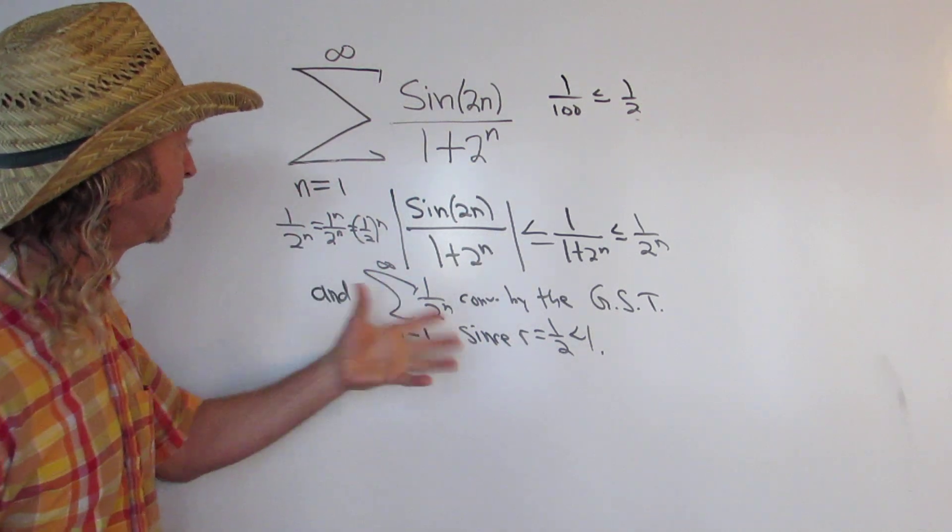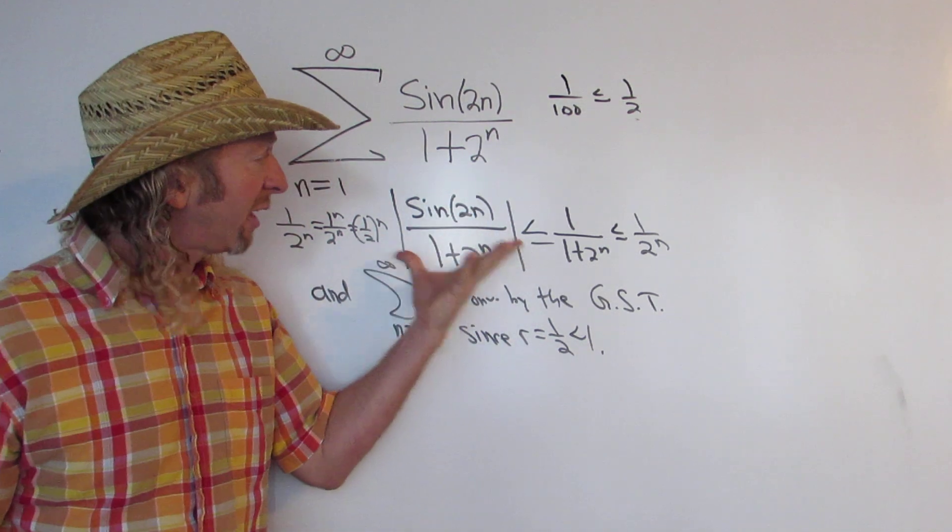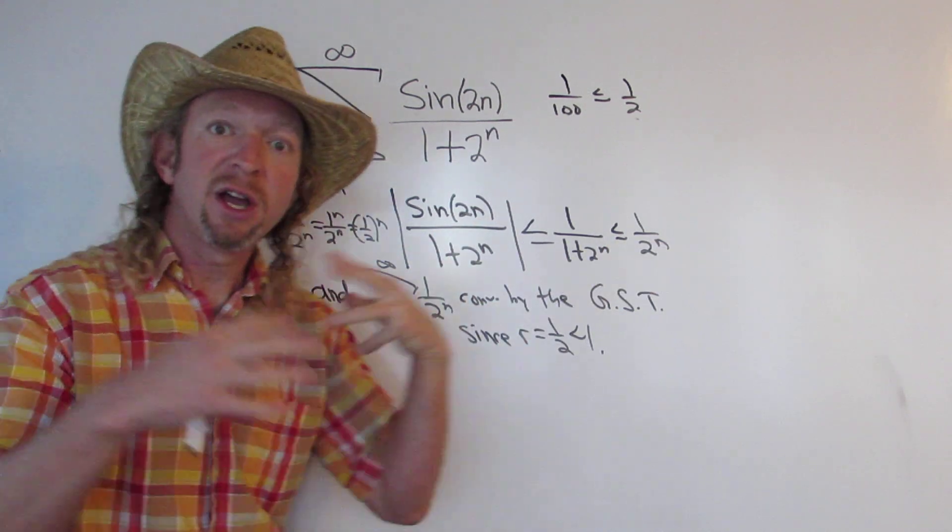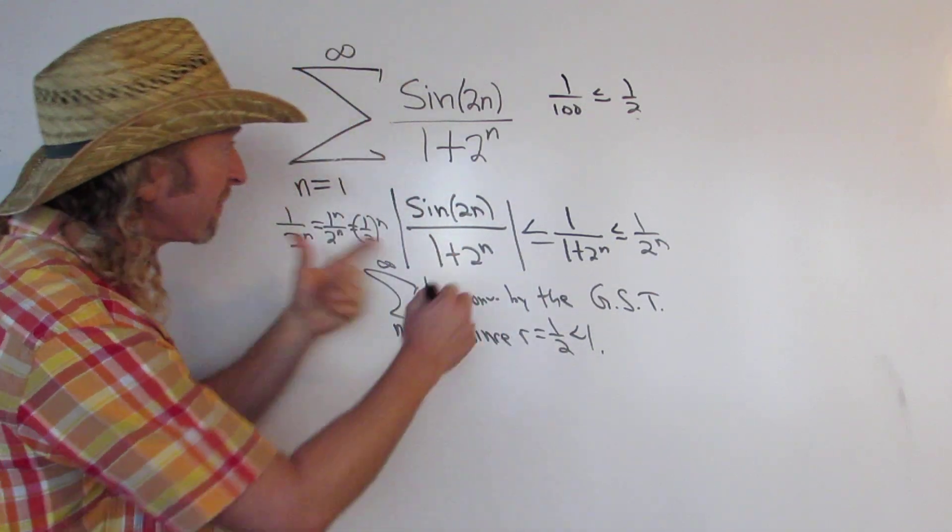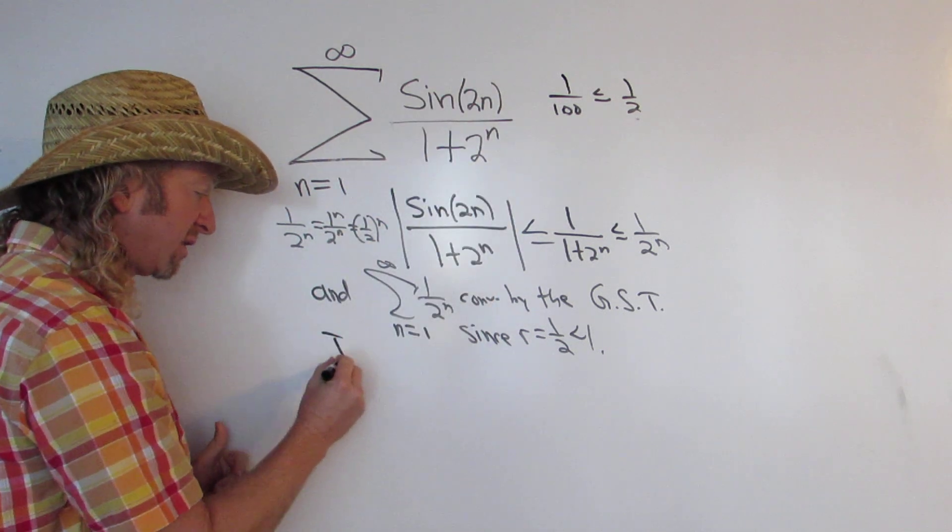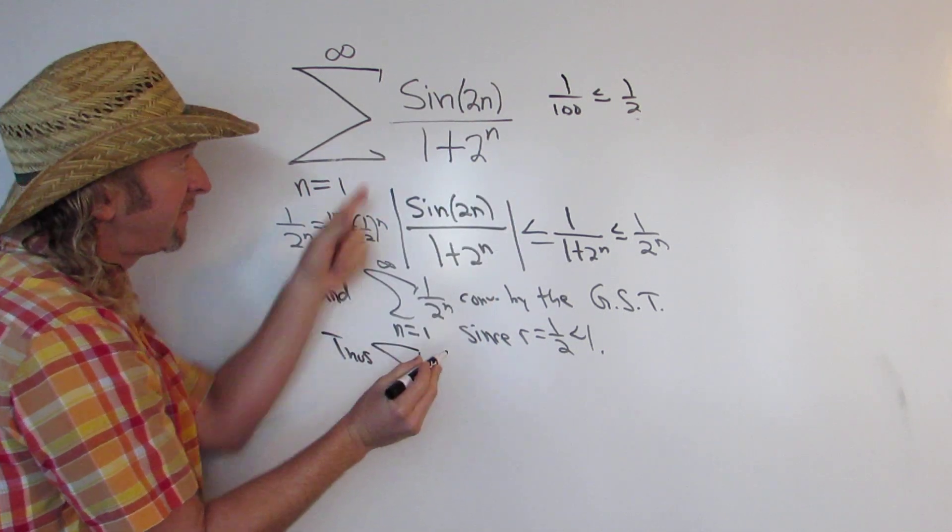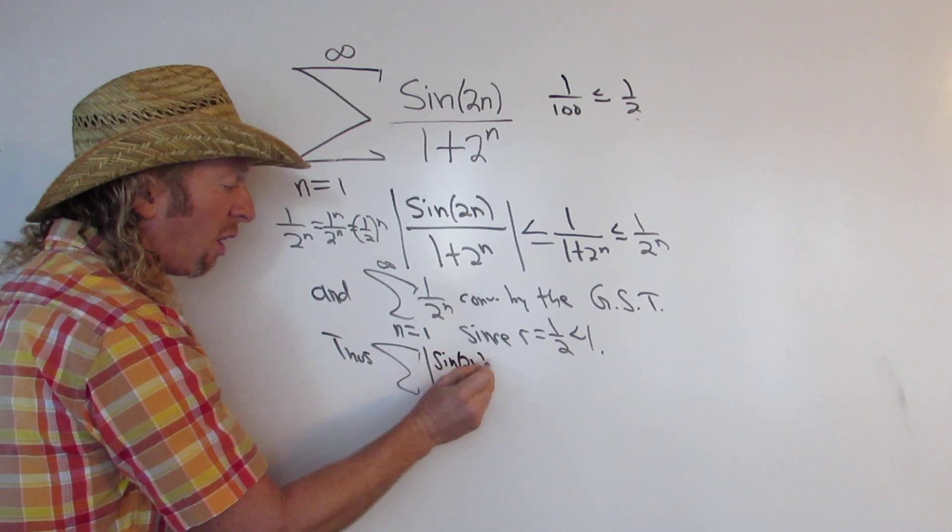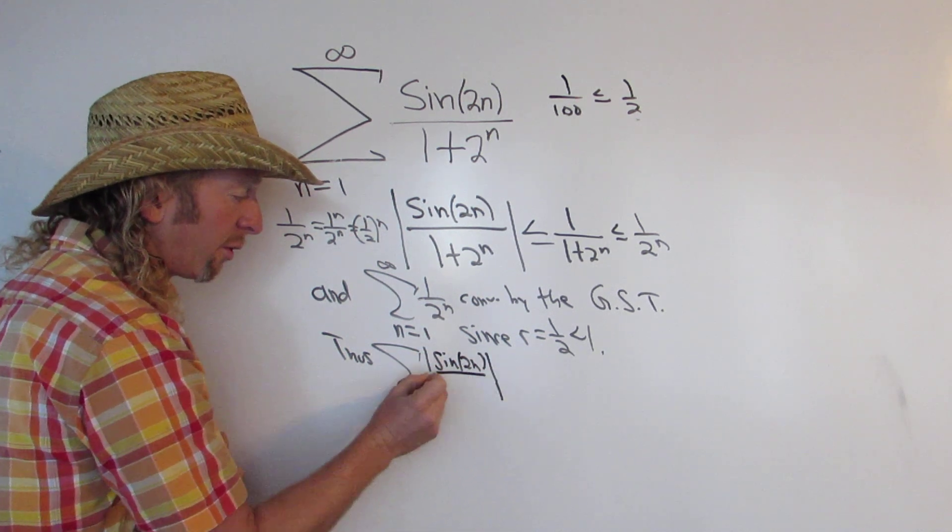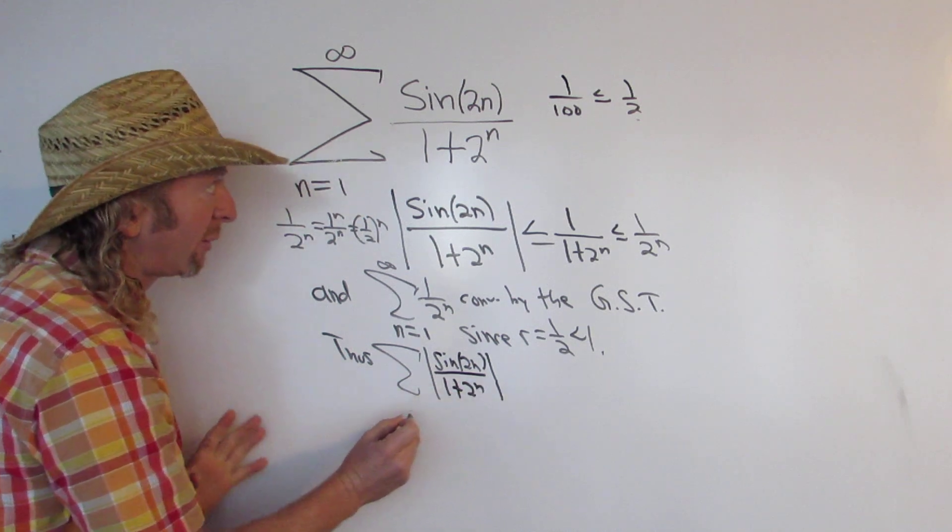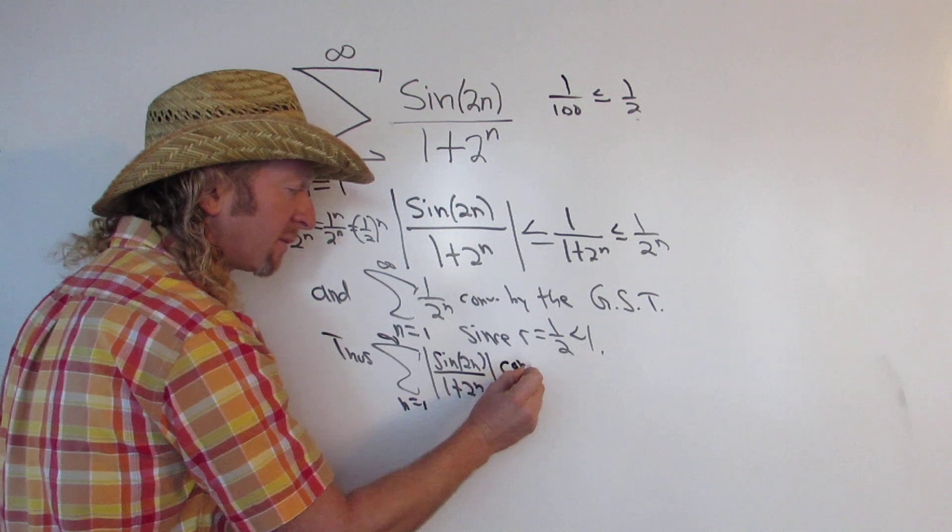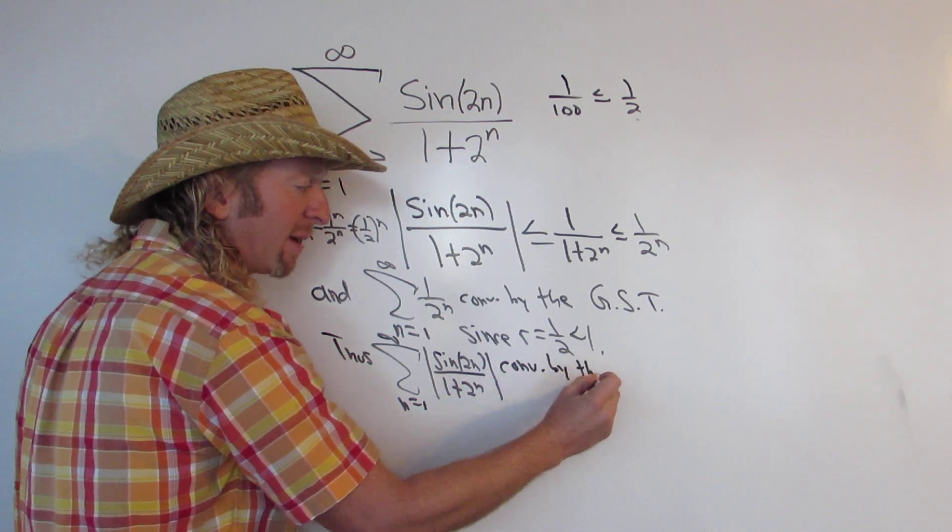Okay, so what did we do? Let's see, we showed that the absolute value of this is less than or equal to this. And the sum of these terms converges by the geometric series test. Therefore, this infinite sum, the infinite sum of absolute values of sine of 2n over 1 plus 2 to the n. Everything looks okay. Thought I messed up there for a minute. This converges by the direct comparison test.